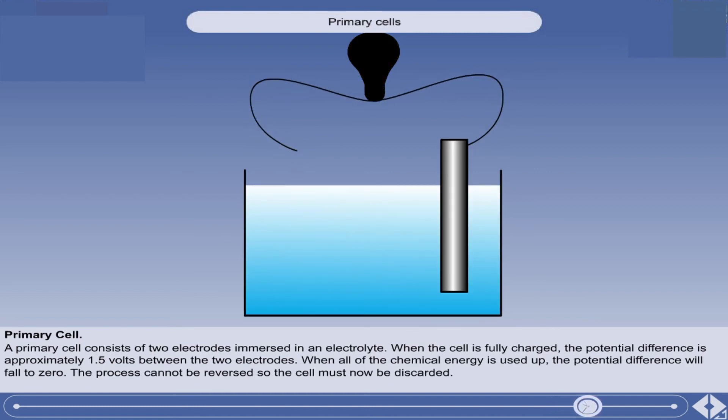When all of the chemical energy is used up, the potential difference will fall to zero. The process cannot be reversed, so the cell must now be discarded.